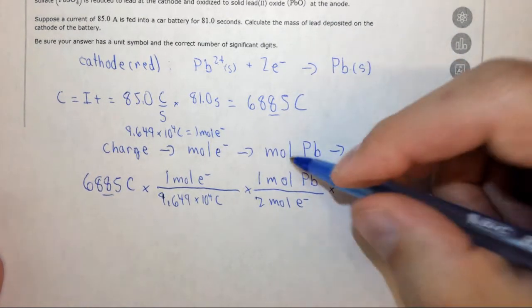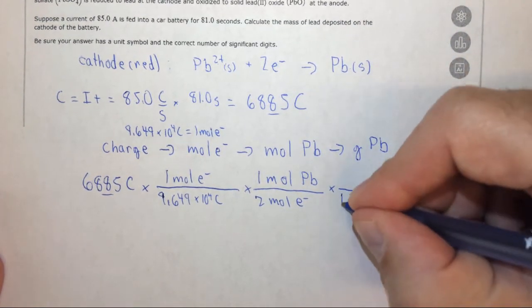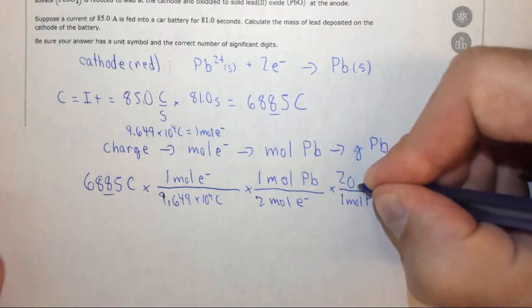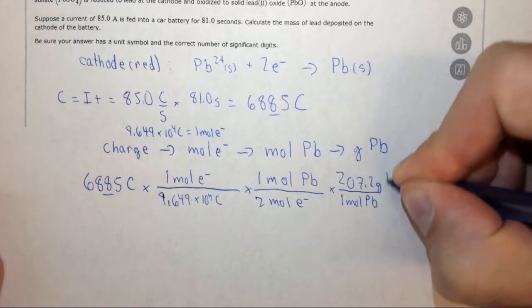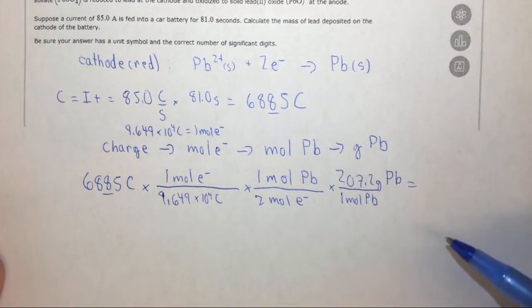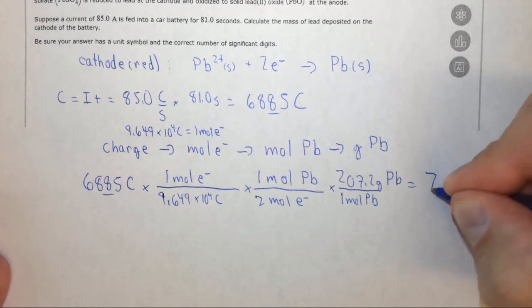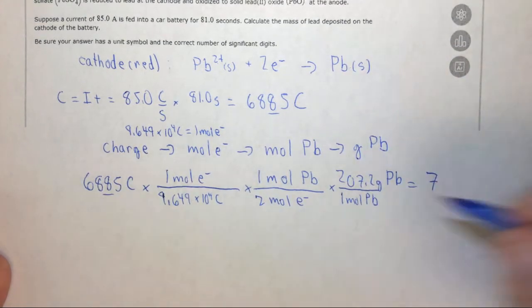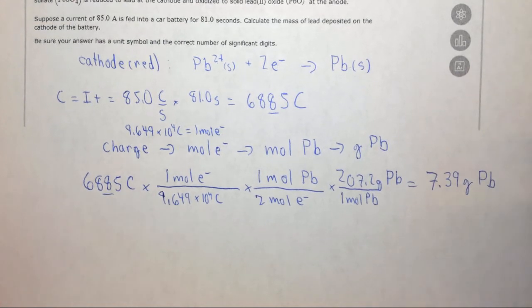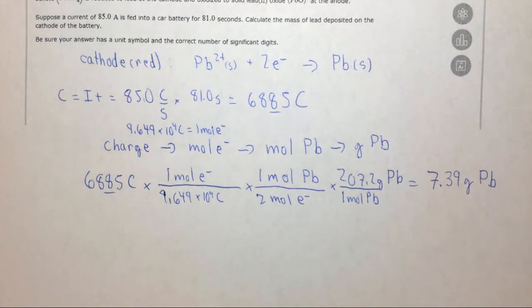Times, now we just need to go from moles to grams using the periodic table. We put 1 mole of lead on the bottom, 207.2 grams of lead on the top. Multiply by the top, divide by the bottom, and you get to 3 significant figures because this is 3, 7.39 grams of lead that are formed when you apply 85 amps for 81 seconds in this particular example.